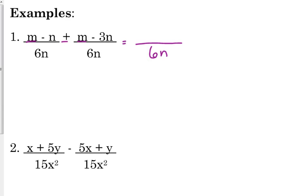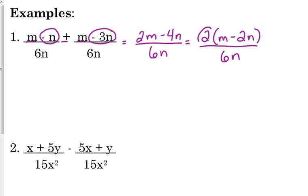So we've got m plus m, so we have 2m. We've got negative n plus negative 3n, that's negative 4n. And then at the last step, just like with those fractions, if we can simplify, we need to simplify. But remember, in order to simplify, you have to be able to factor something out. So in that numerator, we can take out a GCF of 2, and then we can simplify the 2 over the 6 to become 3 on the bottom. So we've got m minus 2n in the numerator over 3n in the denominator.